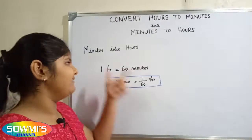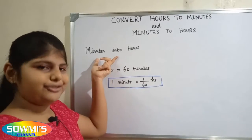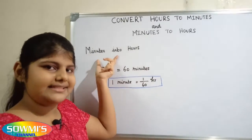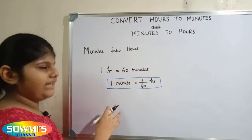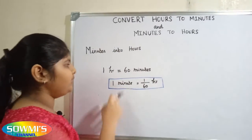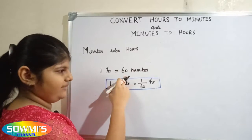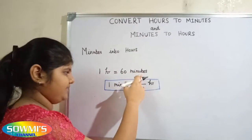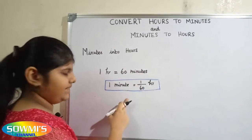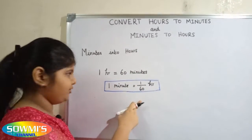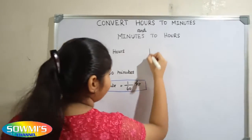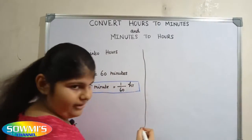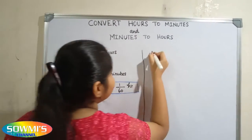Now let us see how to convert minutes into hours. We already know that 1 hour is equal to 60 minutes, so 1 minute is equal to 1 divided by 60 hours. For example,